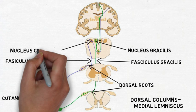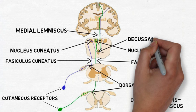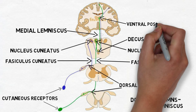It is from these nuclei that the second part of the pathway arises, a fiber bundle called the medial lemniscus. The medial lemniscus leaves the dorsal column nuclei and quickly decussates or crosses over to the other side of the brain before traveling up to the thalamus, where it synapses in a part of the thalamus called the ventral posterior lateral nucleus, or VPL.